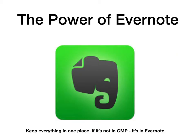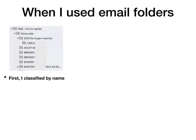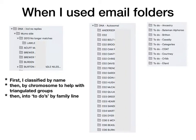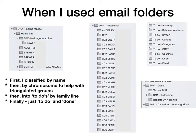So, Evernote. Before I had Evernote, filing was a mess — lots of paper, lots of electronic emails. I could remember having pedigrees from people but couldn't find them when I needed to. I used email folders, first classifying by name, then by chromosome to help with triangulated groups, then to-dos by family line, then finally just to-dos and done. And then I saw the light and decided to use Evernote.